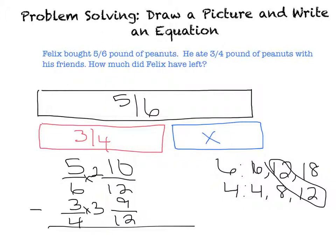Now I subtract. First thing I know is that my denominators are the same. So my denominator in my answer will be 12. Now I'm just going to subtract. 10 minus 9 is 1. Can I reduce? No, that's as far as I can go. So my final answer is he has 1/12 of a pound left.